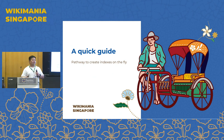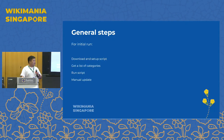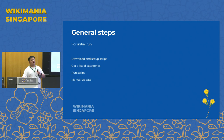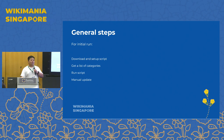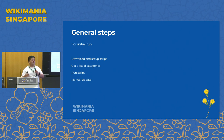I don't have my laptop to demo the crawl, but this is my workflow to create the index. The general steps are: download and set up the script — it's on GitHub, you can fork and clone it; get a list of categories, because my script uses categories to get all the articles out, so you need to identify the related categories first; then run the script; and then manually update into Wikipedia.